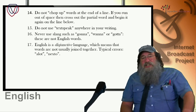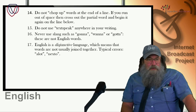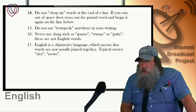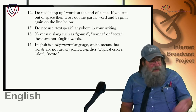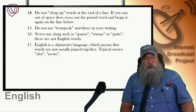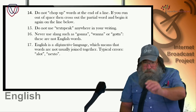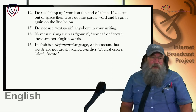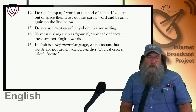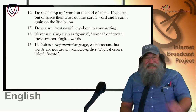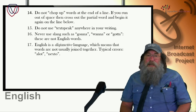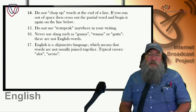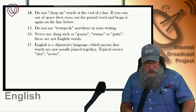English is a disjunctive language, which means that words are not usually joined together. There are exceptions — 'cell phone', for example, is nowadays almost always written as one word. But your typical errors are 'alot' and 'nextto' — they must be separated out. Don't join words together.